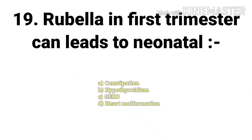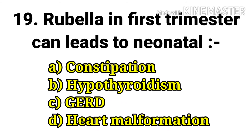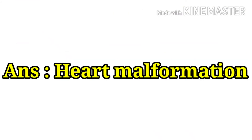The next question: rubella in the first trimester can lead to neonatal — options are constipation, hypothyroidism, gastroesophageal reflux disease, and heart malformation. The answer is heart malformation.